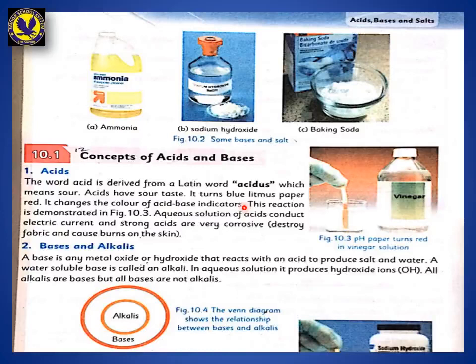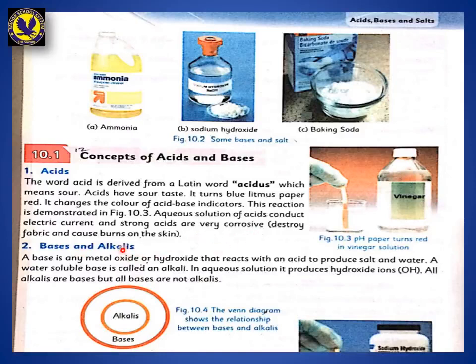Acid changes the color of litmus to red. This indicates an indicator which shows the presence of acid or base. They change the color of that indicator. The reaction is demonstrated — you can see this in a picture. It has been dipped in pH paper, and the color of the pH paper has changed. It was dipped in vinegar. Aqueous solution of acid conducts electric current, and strong acids are very corrosive — they destroy fabric and cause burns to the skin. It can hurt and burn your skin. Do not put strong acid on your hands.